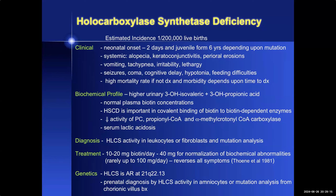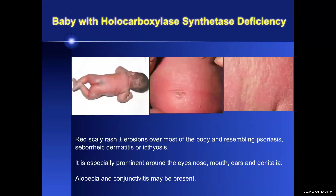Treatment involves high-dose biotin supplementation of 10 to 20 milligrams per day, and up to 40 milligrams for normalization of the biochemical abnormalities, and in rare severe cases up to 100 milligrams per day to actually reverse the clinical symptomatology. The dramatic dermatologic features include a red scaly rash with or without erosions over most of the body resembling psoriasis, seborrheic dermatitis, or ichthyosis, especially prominent around the orifices. Alopecia and conjunctivitis may also be present.